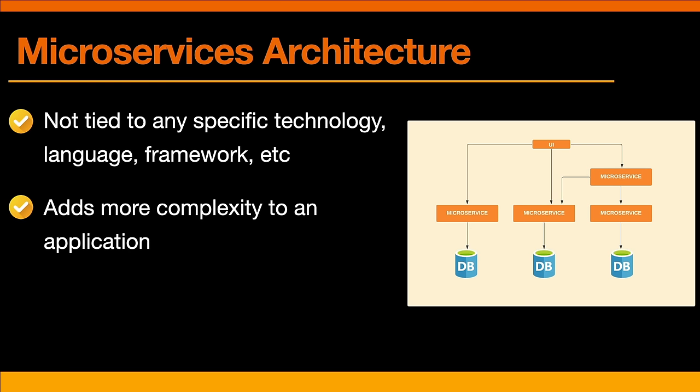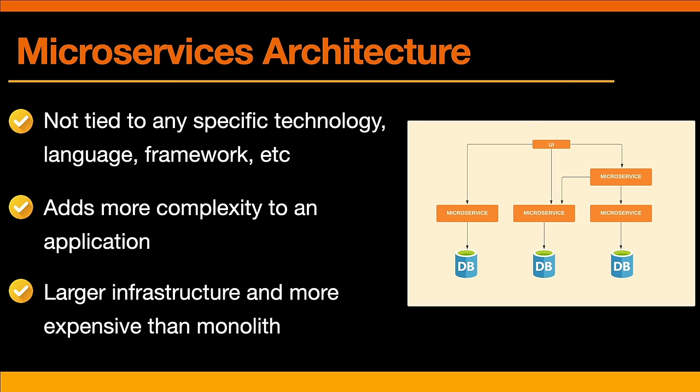Some of the downsides of microservices are that they do add a lot of complexity to an application that would be completely unnecessary for a small project — complexities in terms of infrastructure, deployment, and communication between services. They also require more infrastructure to manage and can be a lot more expensive to run. DevOps tools and practices like Docker or Kubernetes are going to be crucial. They're not going to be the right tool for every job — I would say they're rarely the right tool for beginner to intermediate-level developers and applications.